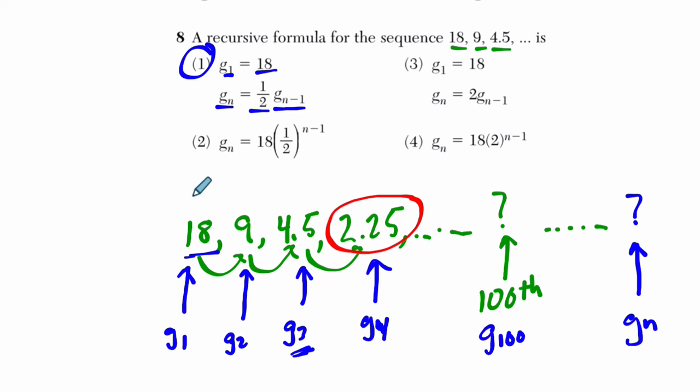Now, if we look at choice 2, this is an explicit formula. And what it does is it says, if you want to know the 100th step, just plug this in. Take 18 and multiply it by a half n minus 1 times. So the number that would go here is going to be 18 times 1 half to the 99th power. And that makes sense because we're halving 18 99 times.